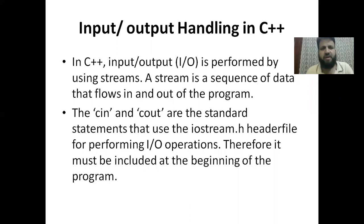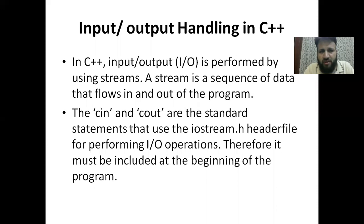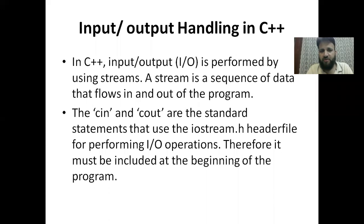Now, what is input and output handling in C++? In C++, input and output is performed by using streams. A stream is a sequence of data that flows in and out of the program. The cin and cout are the standard objects that use the iostream.h header file for performing I/O operations.